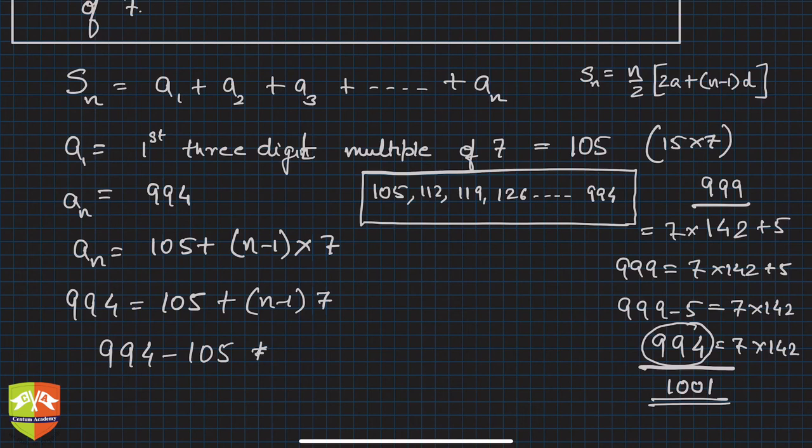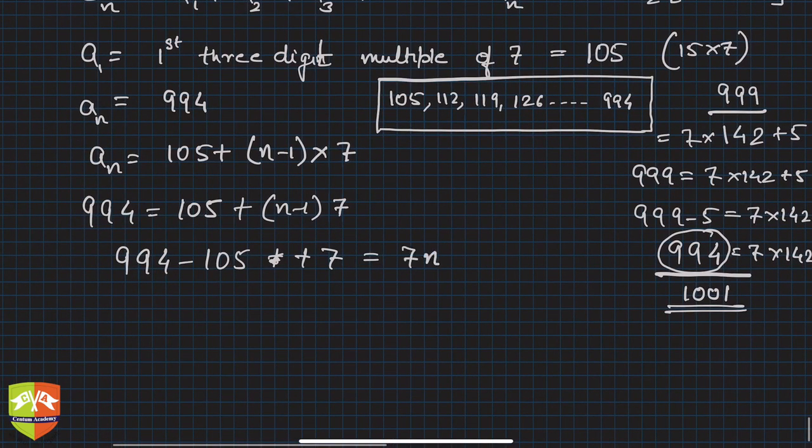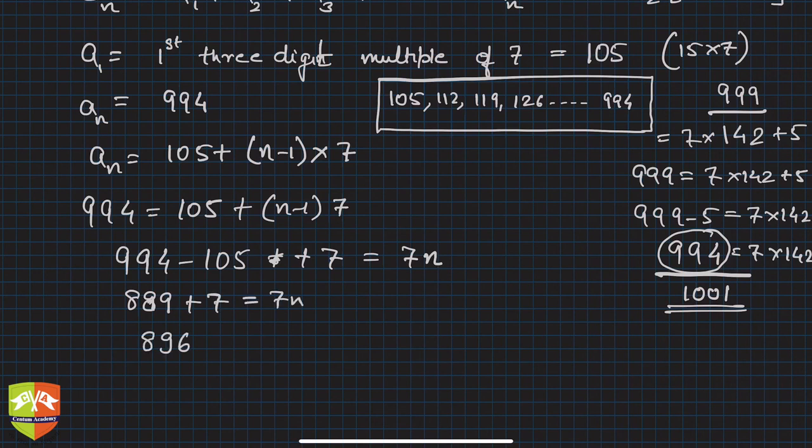So hence if you now calculate, this is 105, so basically 889. 889 plus 7 is 896. So 896 divided by 7 is n. So n is equal to 128.